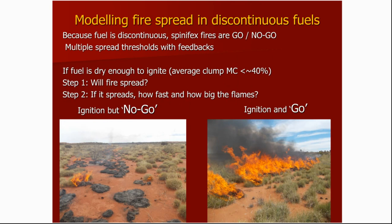There are three steps in trying to understand or model or predict the behaviour of fire in spinifex grasslands. The first step is to determine whether or not the clumps are dry enough to burn. The moisture content of spinifex — I've found the most reliable way is to actually measure the average moisture content in a clump, including dead and live material. A lot of fire behaviour models focus on the moisture content of the dead material, but that doesn't work very well for spinifex, because the dead material forms varying proportions of the fuel load, from less than 5% through to 15%, depending on fuel age and physiological development.